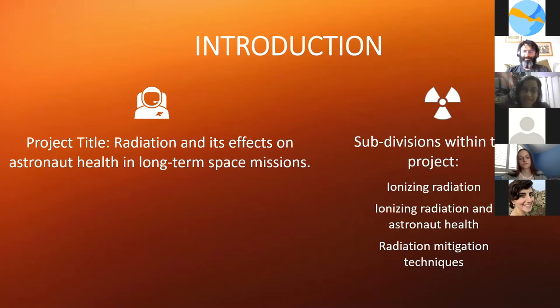The project is titled Radiation and its Effects on Astronaut Health in Long-term Space Missions. The sub-teams within the project are Ionizing Radiation, Ionizing Radiation and Astronaut Health, and Mitigation Techniques, with which Julia, Polina, and Shuri Harvard. The project aims to estimate the long-term effects of radiation exposure on astronaut health, with focus on low-Earth orbit, transit to Mars, and radiation exposure on the Mars surface.